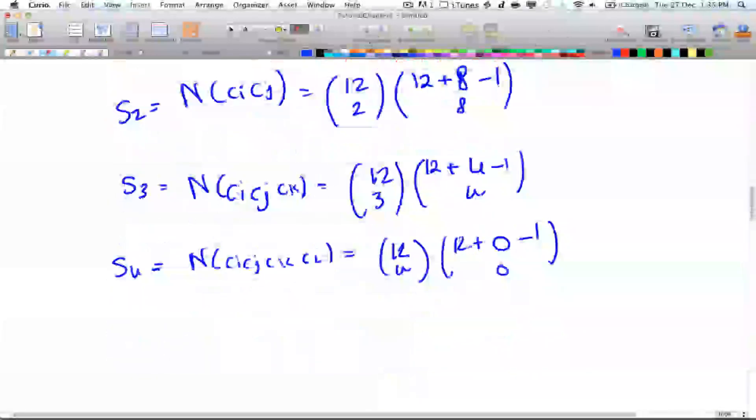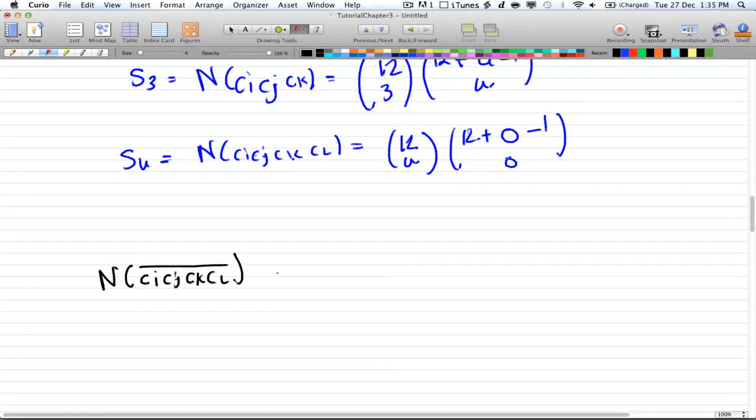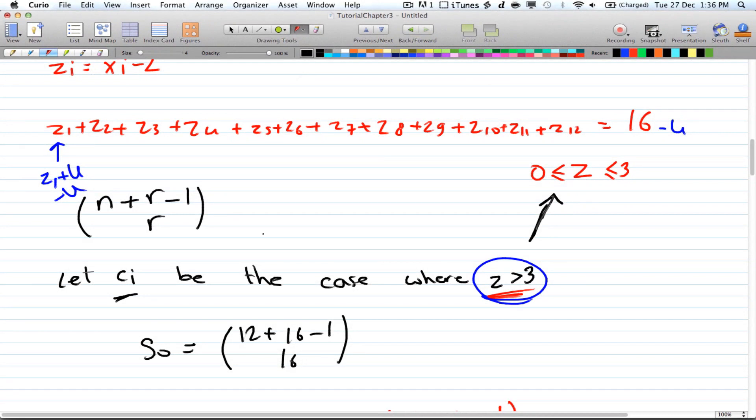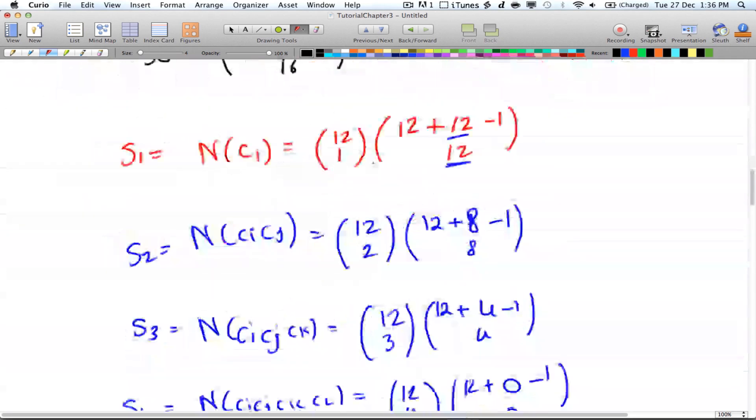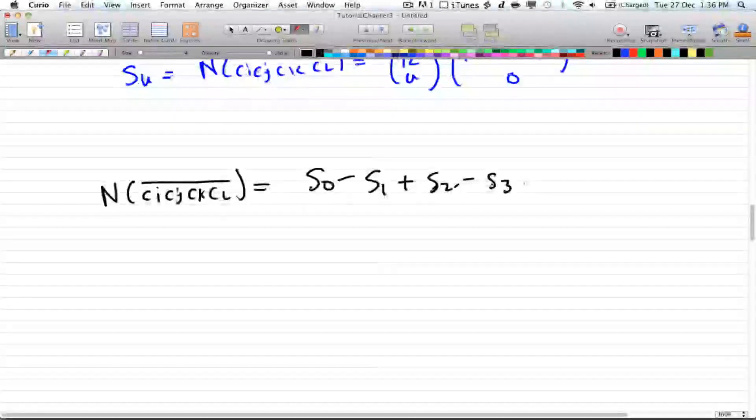So now we're trying to find n ci, cj, ck, cl, not. So the cases where all of these are less than or equal to 3. So what we did is we changed the condition to being not true, so we went to the exact opposite, and then we're negating it. So we get the actual condition, which has to be between 0 and 3. And that is equal to s0 minus s1 plus s2 minus s3 plus s4.